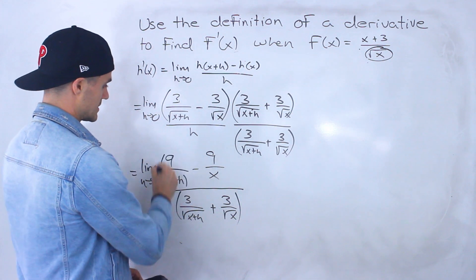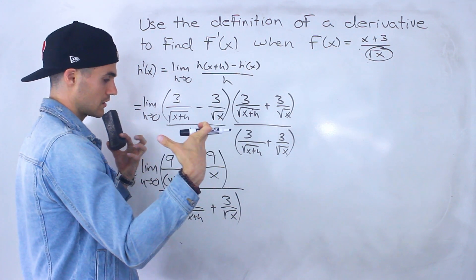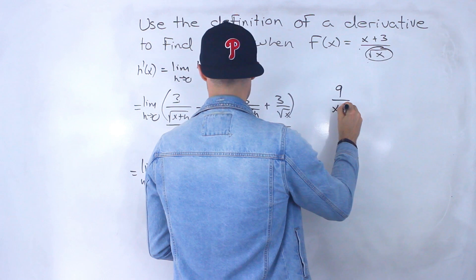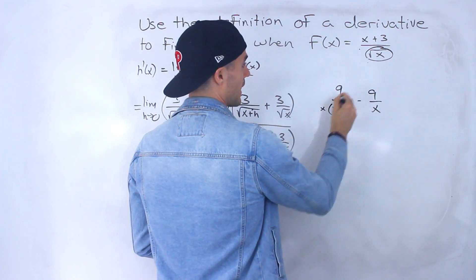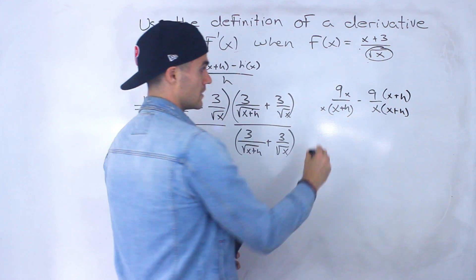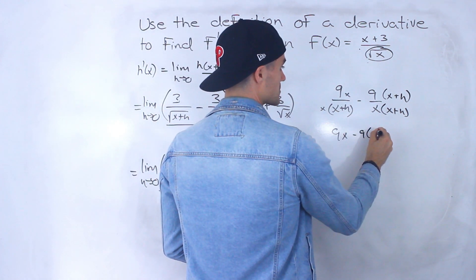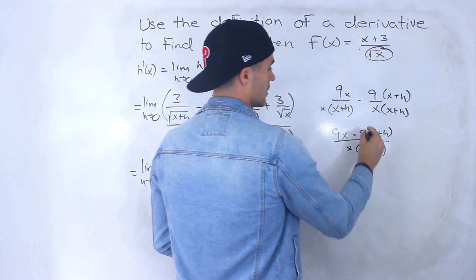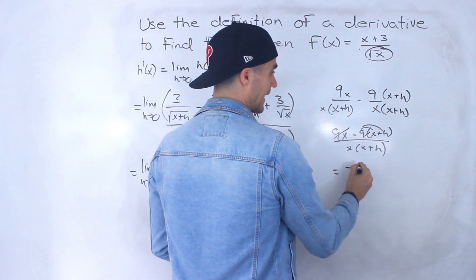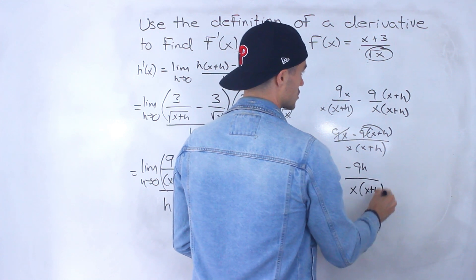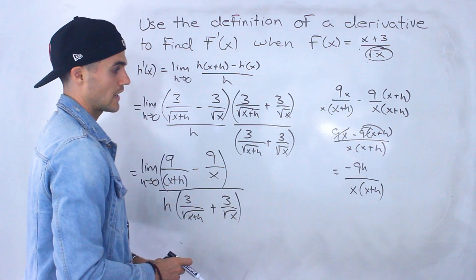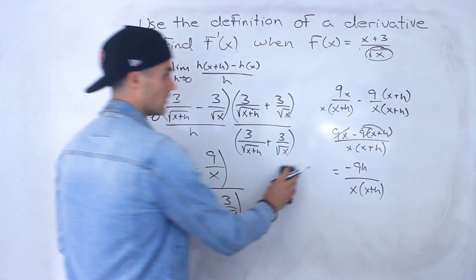I'm going to simplify the numerator separately. Taking the two fractions 9 over x plus h minus 9 over x and combining them: multiply the first by x and the second by x plus h to get a common denominator of x times x plus h. That gives 9x minus 9 times x plus h, all over x times x plus h. Distributing the negative 9 inside the bracket, the 9x's cancel and we're left with negative 9h over x times x plus h.